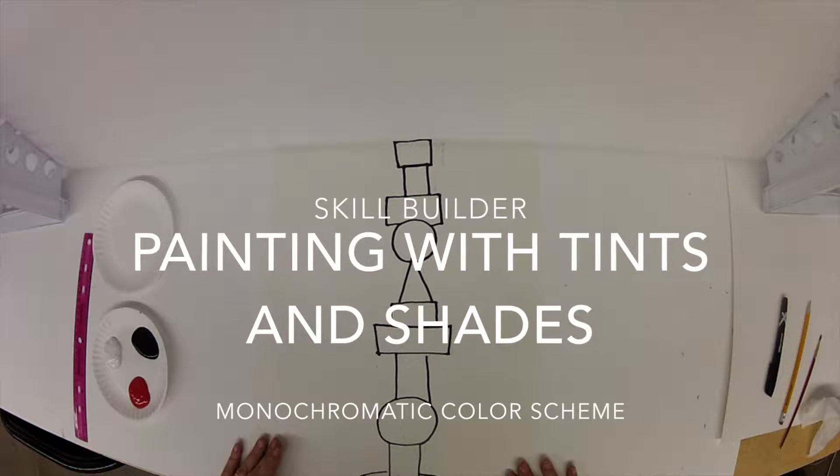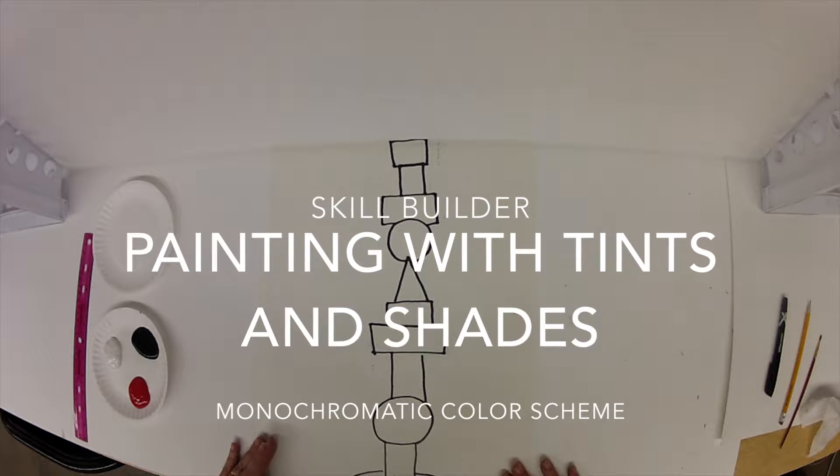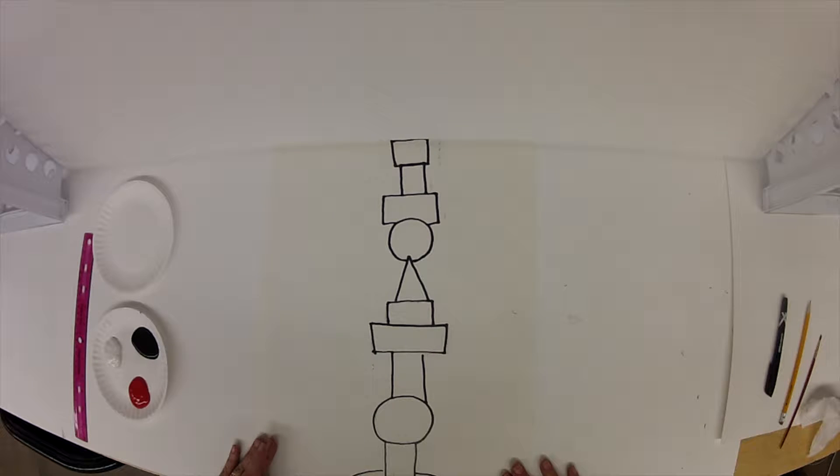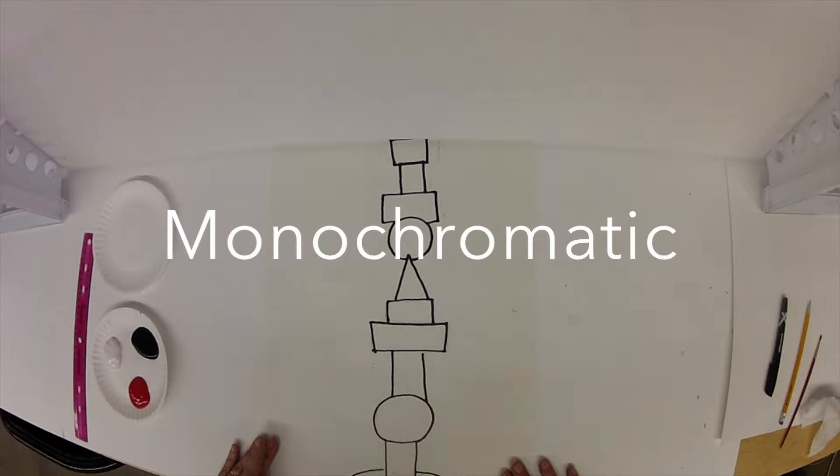One of the things we learned by watching John Dawson and his totems is that he unified all his recycled objects by using similar colors. In this case, we're going to use what's called a monochromatic color scheme. Monochromatic means one, mono, chroma, color.